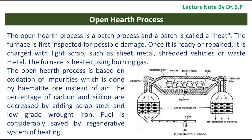The open hearth process is a batch process, and a batch is called a heat. The furnace is first inspected for possible damage; once ready or repaired, it is charged with light scrap such as sheet metal, shredded vehicles, or waste metal. The furnace is heated using burning gas. The process is based on oxidation of impurities done by hematite, and the percentage of carbon and silicon are decreased by adding scrap steel and low-grade wrought iron. Fuel is considerably saved by a regenerative system of heating.